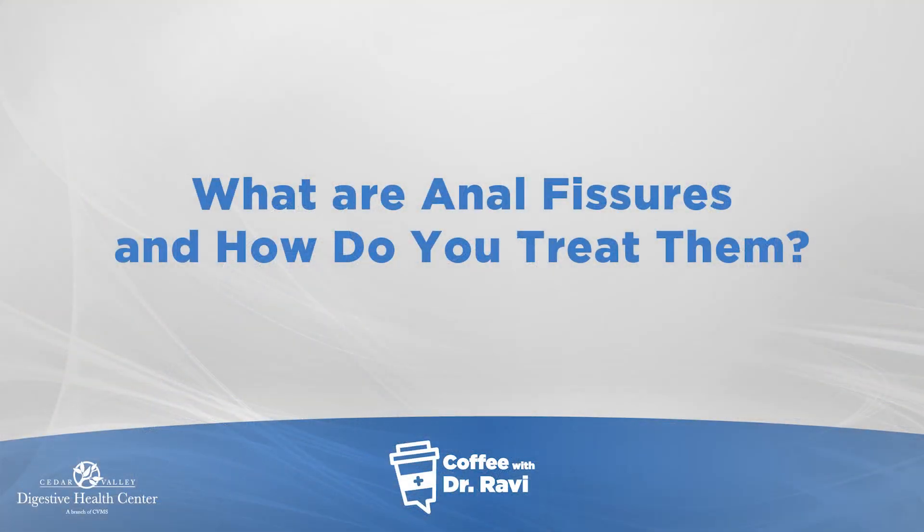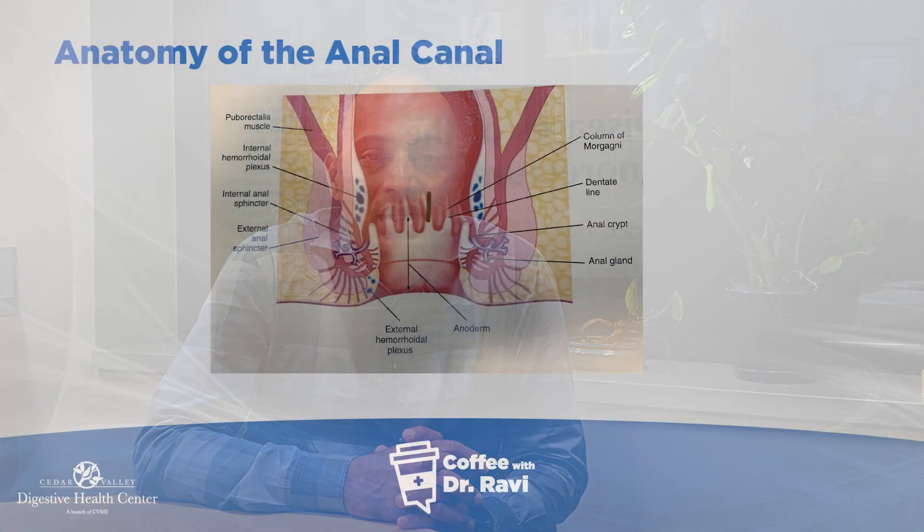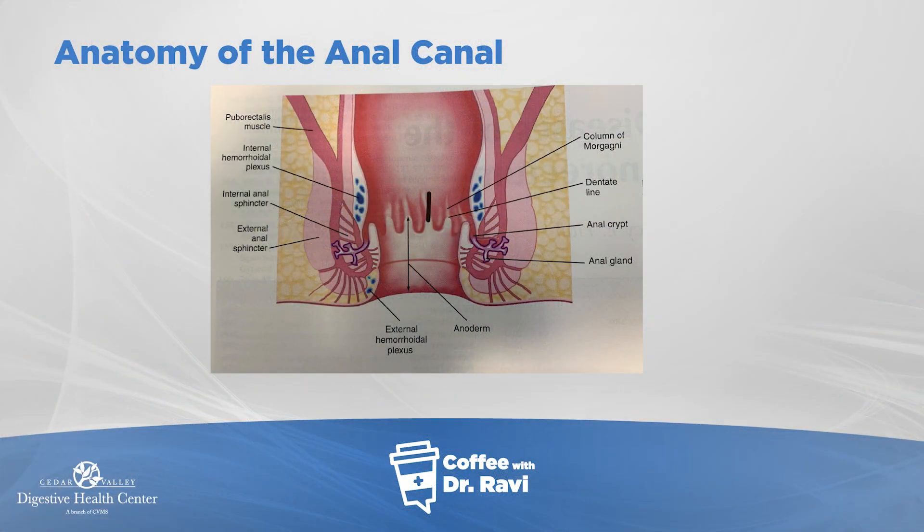We hear a lot about fissures and hemorrhoids in common terminology. I wanted to put up this slide which will explain how the anal canal looks. The anal canal is the opening we commonly refer to as the anus and the extension that goes up about four centimeters as it leads into the rectum. The anal canal is a little different from the rectum in how it develops in the womb.